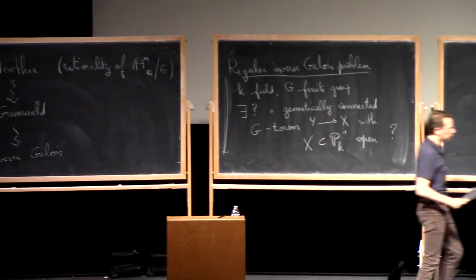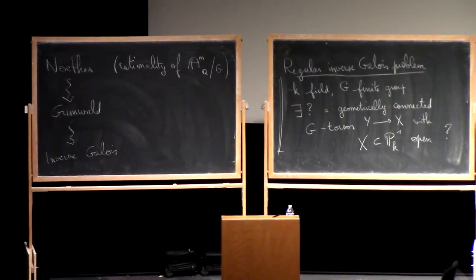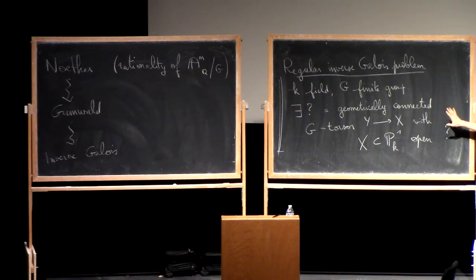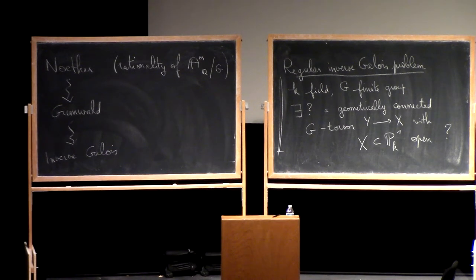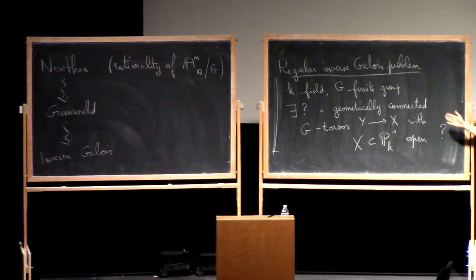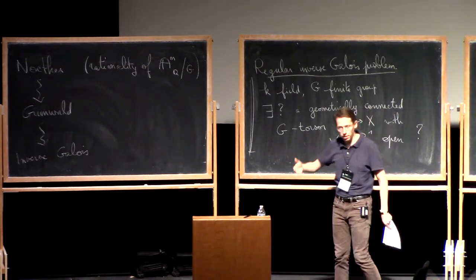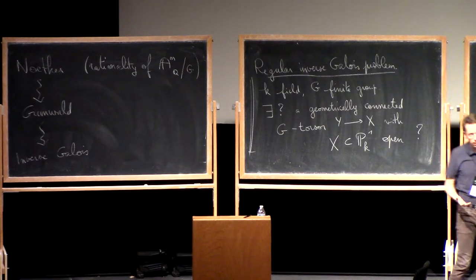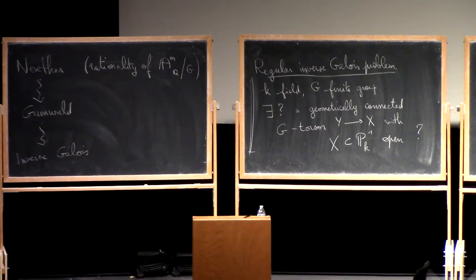So it's again a stronger version. But contrary to Noether's problem, this might always have a positive answer for all fields and all finite groups. This is probably what's hoped — at least no counterexample is known. What's good with this question, better than with the inverse Galois problem itself, is that it has this geometric flavor which connects it to topology in a very close way. And topology is much easier than number theory.